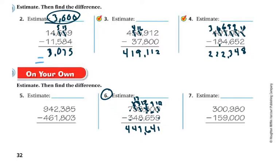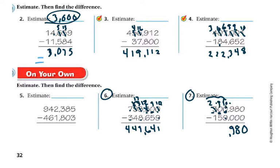Those zeros might trip you up a little, so let me do one more like that — number 7. 0 minus 0 is 0. 8 minus 0 is 8. 9 minus 0 is 9. Now I can't take 9 from this one. I can't regroup from here, so I have to regroup from further over — this becomes a 2, this becomes a 9, and this becomes a 10. I have to go all the way over to regroup because I can't take from 0. 10 minus 9 is 1. 9 minus 5 is 4. 2 minus 1 is 1. So that's 141,980.